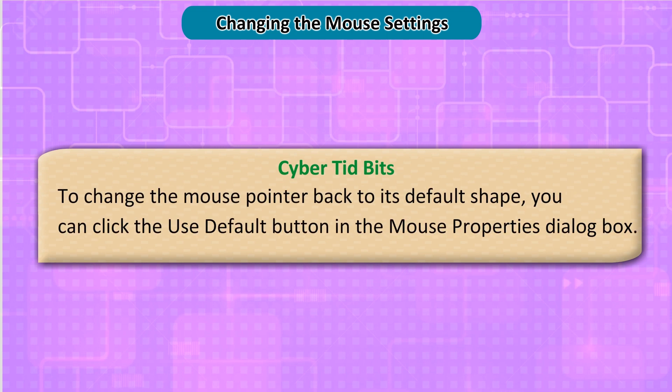To change the mouse pointer back to its default shape, click the Use Default button in the Mouse Properties dialog box.